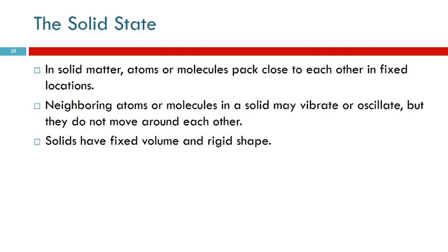In a solid, particles are very close together. The particles vibrate or oscillate, but they don't move relative to each other. Because of this, solids have a fixed volume and a rigid shape. You take an ice cube in a glass and you dump it into a bowl or you put it on the counter, the shape of it doesn't change, and its volume doesn't change.